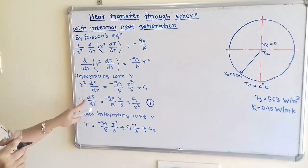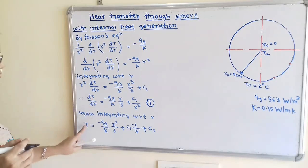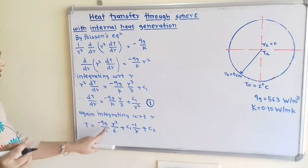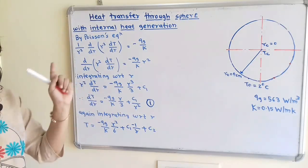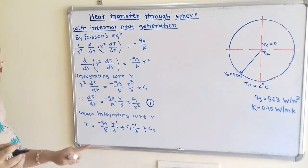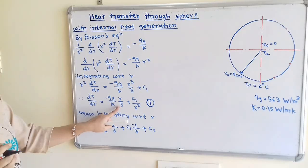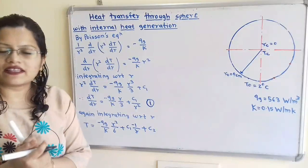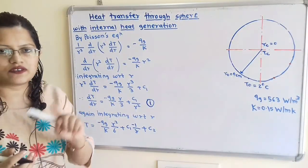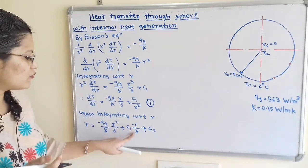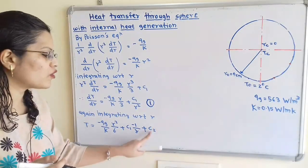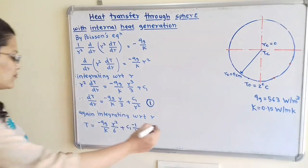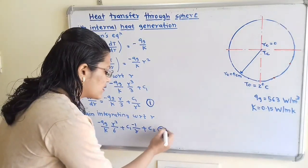After the second integration, T = −(QG/K) · (R²/6) − C1/R + C2. This is equation 2. There are two unknown constants C1 and C2, which we will find by applying boundary conditions.